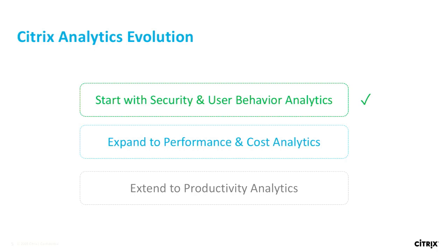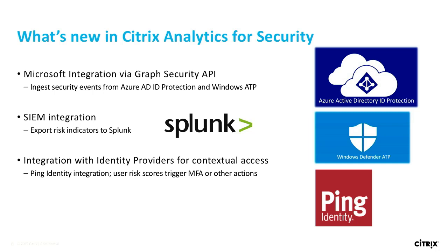I'll spend a quick minute on security analytics before we deep dive on performance. On the security analytics side, there are three key announcements we made at the keynote. First, a lot of Citrix customers are also Microsoft customers. Microsoft exposes a security graph API, and through that API, we're able to consume security events so that as we calculate risk scores, we're not just looking at Citrix products installed but also partnering with companies like Microsoft to take that data into account.